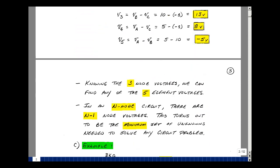Now, this last example, we knew three node voltages, and we could solve for the element voltages of five elements. In general, if you have an N node circuit, there are N minus one nodes, and if you know those N minus one node voltages, that actually is the minimum set of unknowns you need to solve for any voltage or any current. And this is the node voltage method.